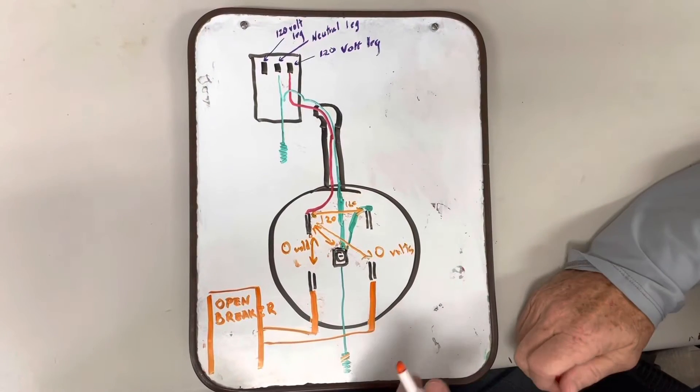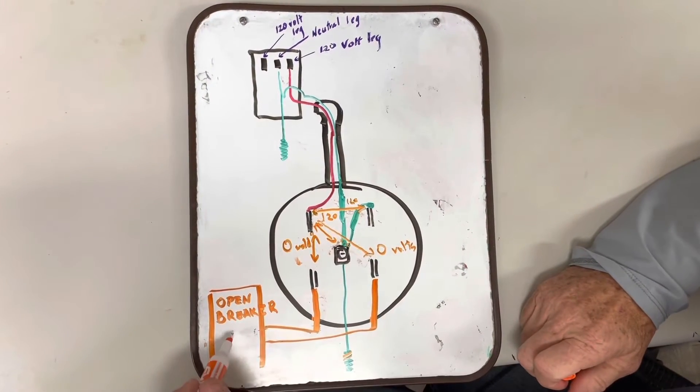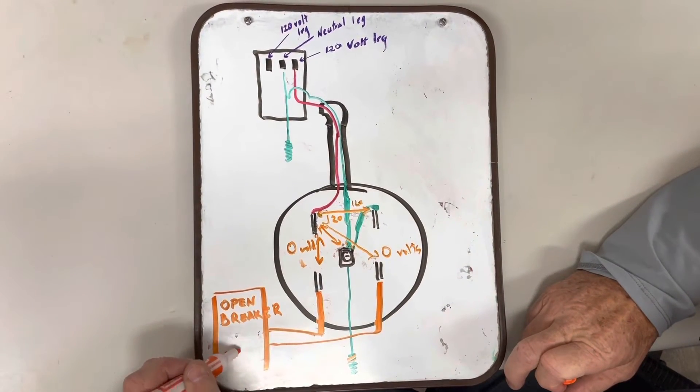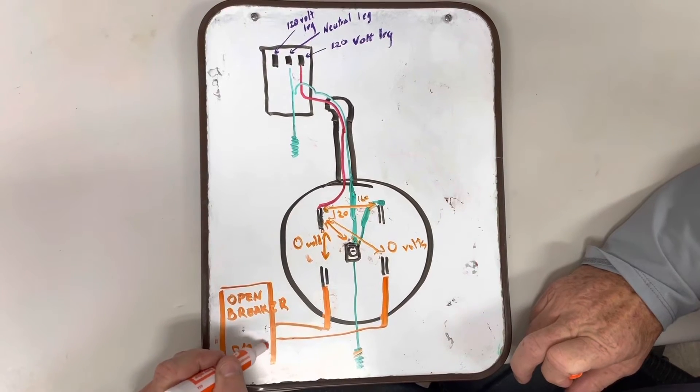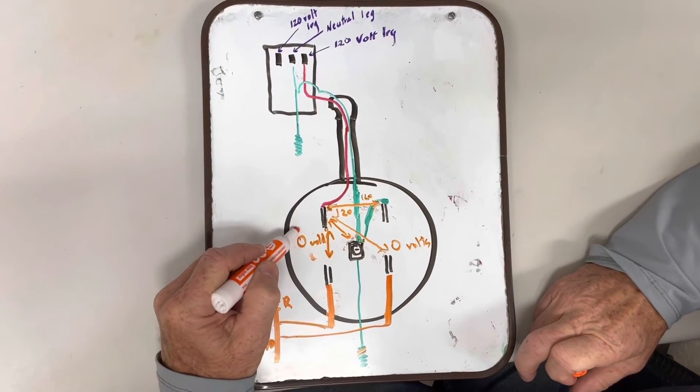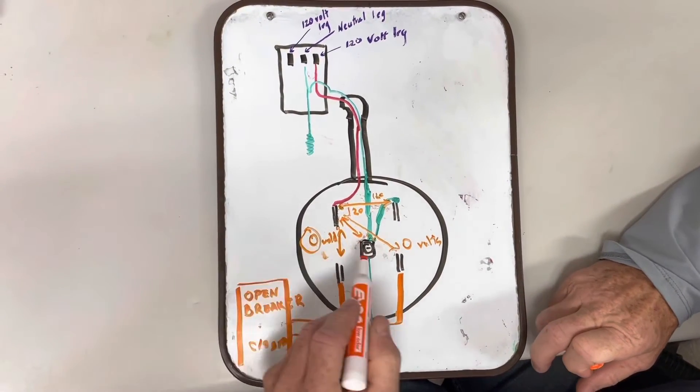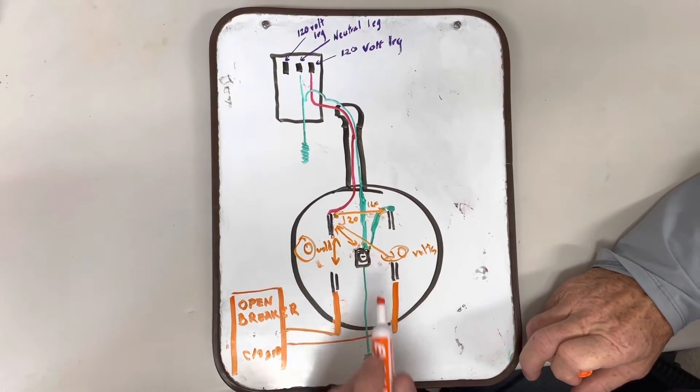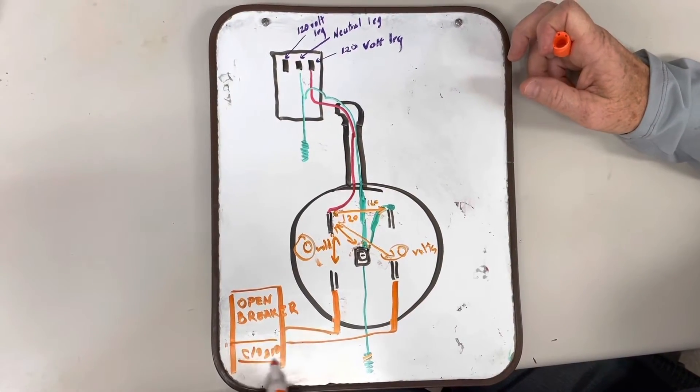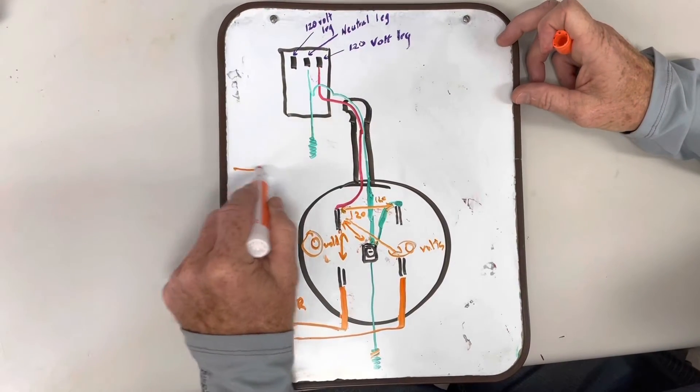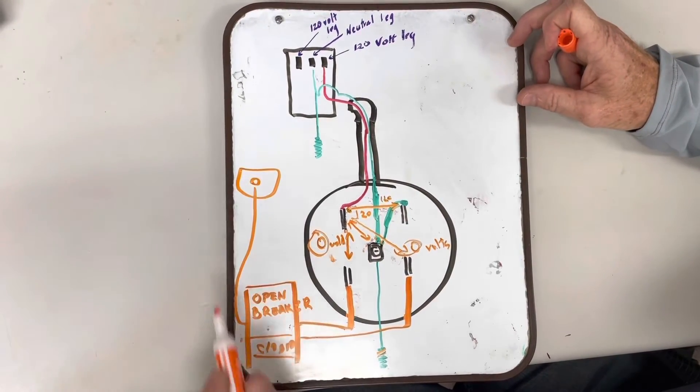Just a little note to everyone that if this breaker is closed, you will get voltage readings here, here and here because you're going to be picking up the equipment, the lights that are on the system. You'll be picking up resistance.